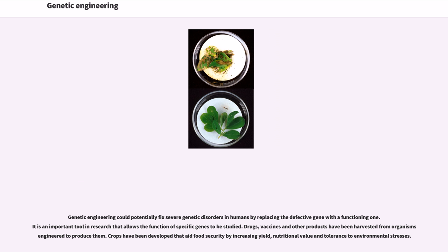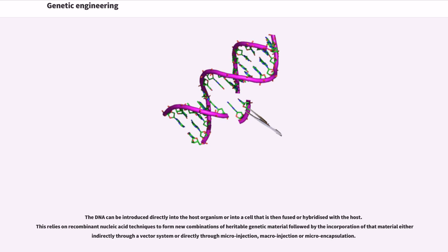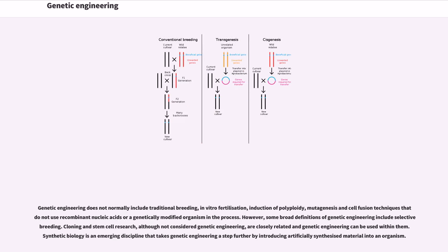The DNA can be introduced directly into the host organism or into a cell that is then fused or hybridized with the host. This relies on recombinant nucleic acid techniques to form new combinations of heritable genetic material, followed by the incorporation of that material either indirectly through a vector system or directly through microinjection, macroinjection, or microencapsulation. Genetic engineering does not normally include traditional breeding, in vitro fertilization, induction of polyploidy, mutagenesis, and cell fusion techniques that do not use recombinant nucleic acids or a genetically modified organism in the process.